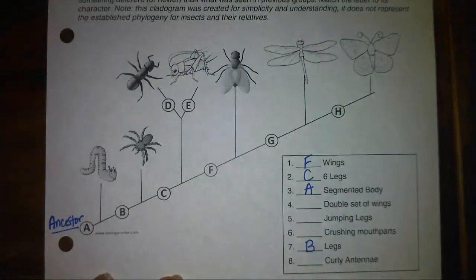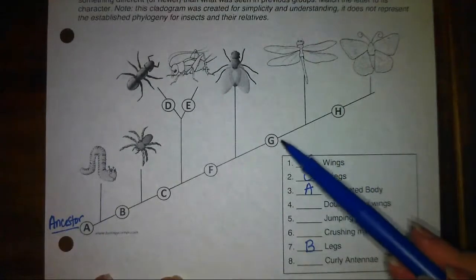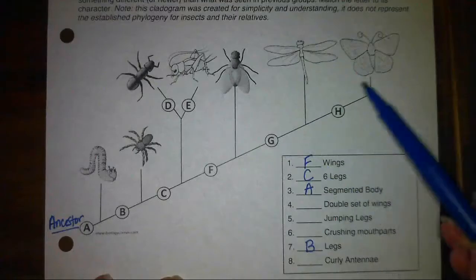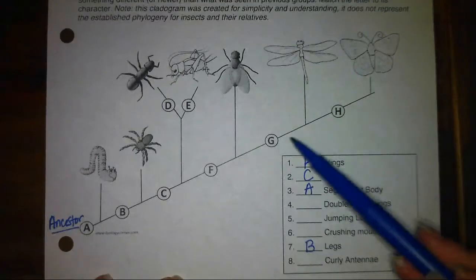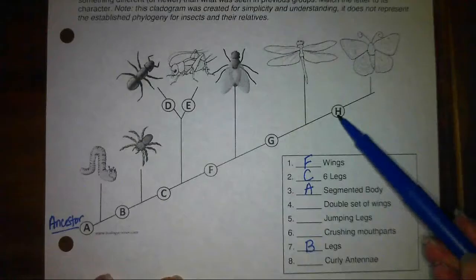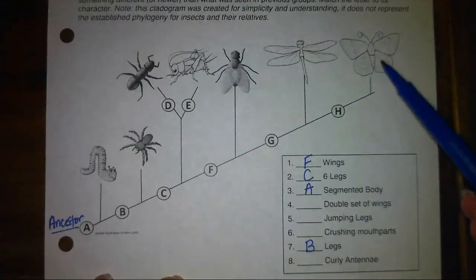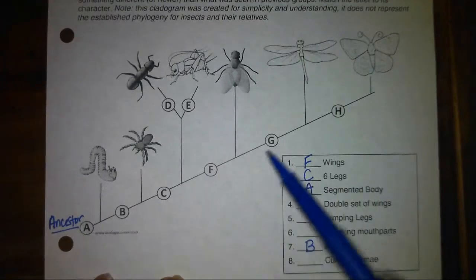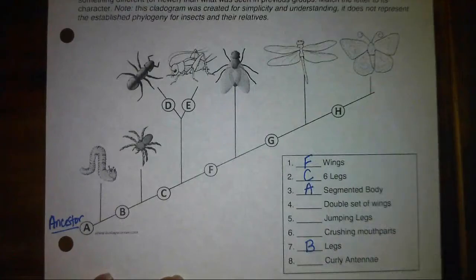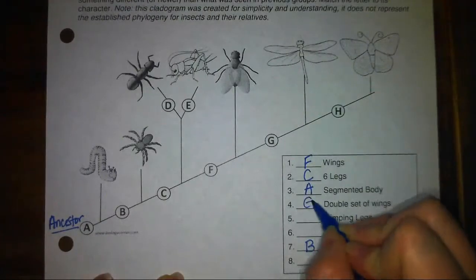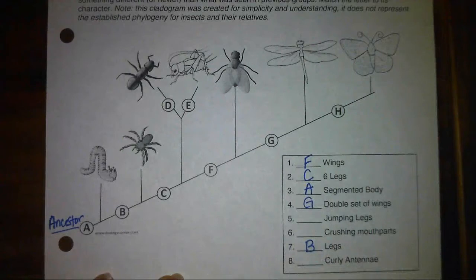Finishing up the rest: think about what trait both of these organisms have — that would be trait G. And then finally, trait H: only the organism at the end of the cladogram, the one furthest from the ancestor, would have that trait along with all the other traits that came along the way. Trait G should be double set of wings, and trait H is curly antenna.